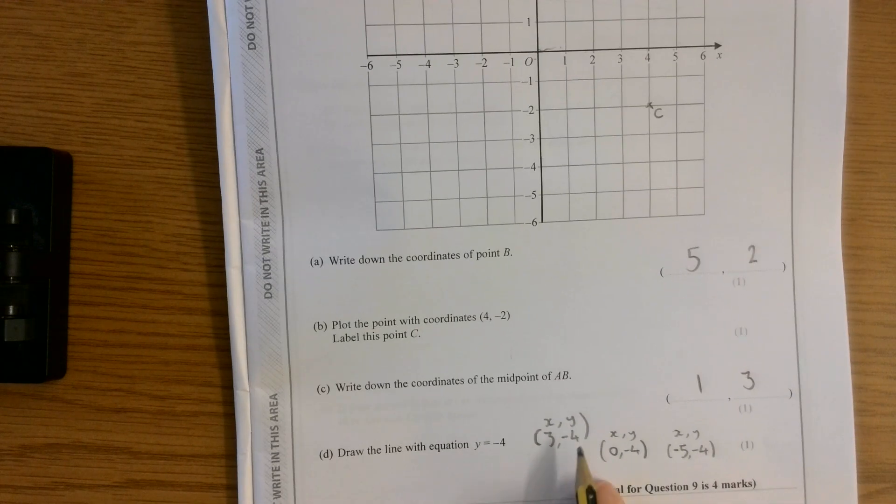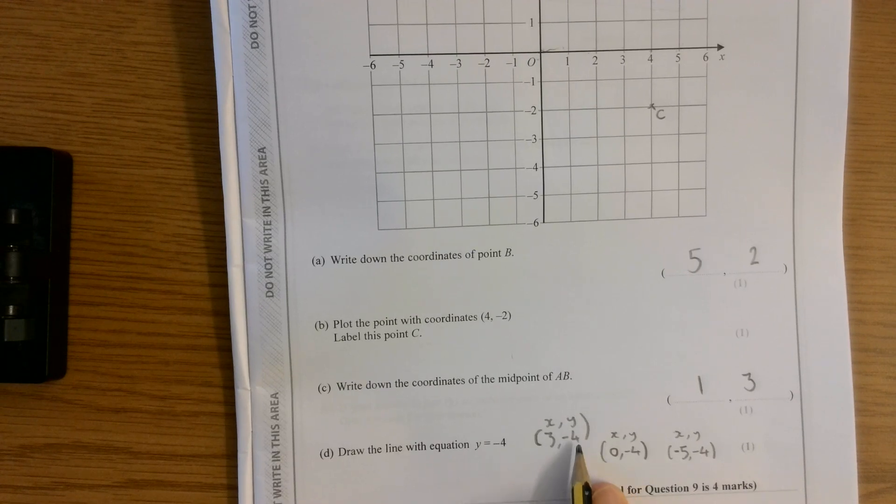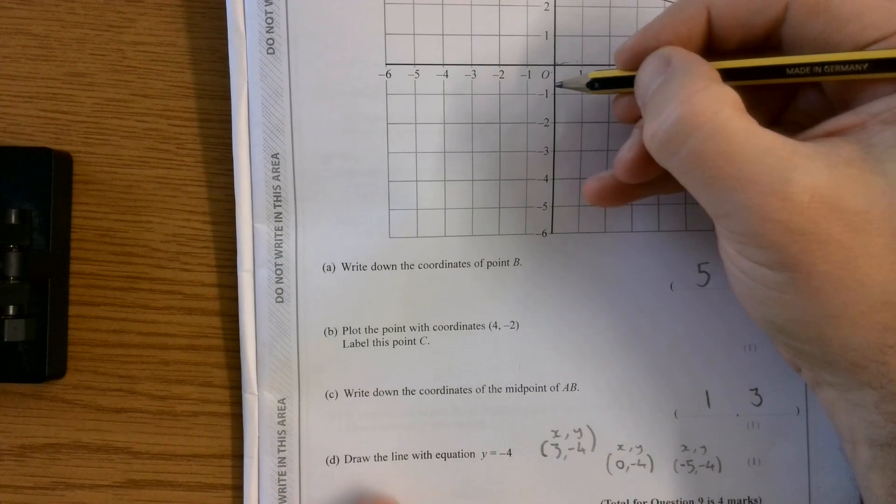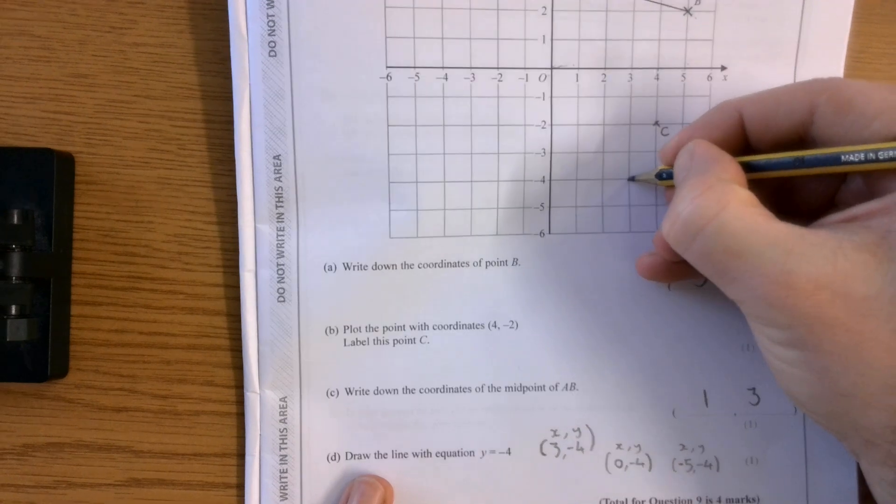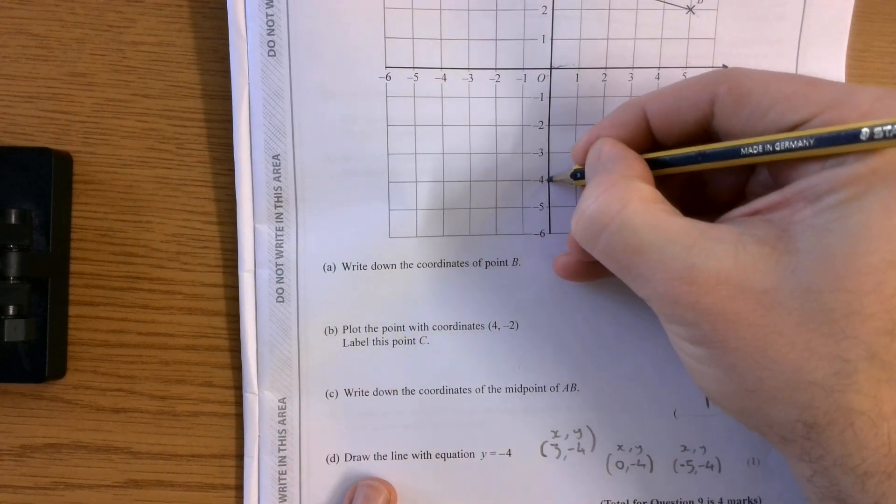Now, if I plot - it doesn't matter which points you pick there, but I just know that my y value is always negative 4. So if I plot those points, I've got 3, negative 4. I've got 0, negative 4.